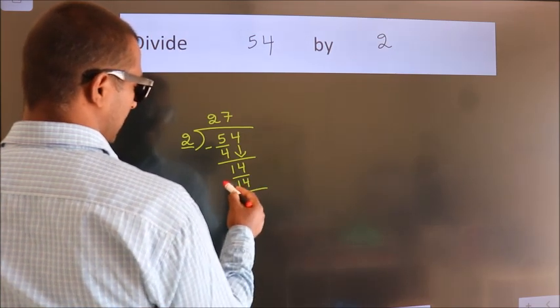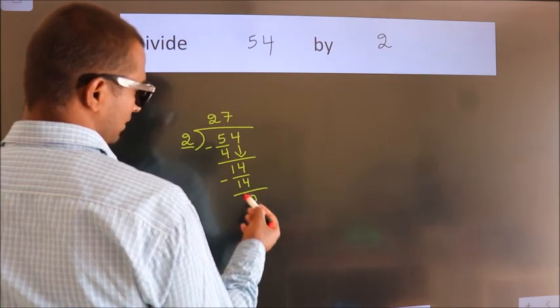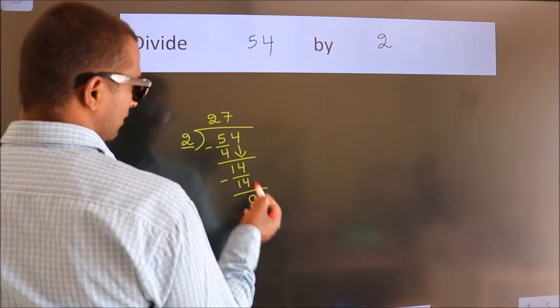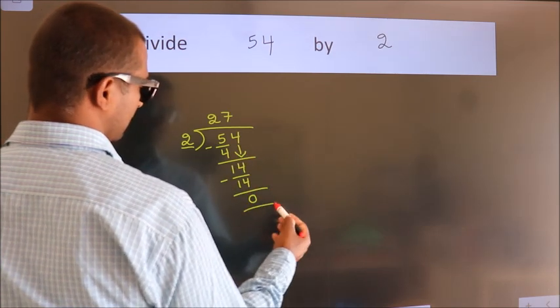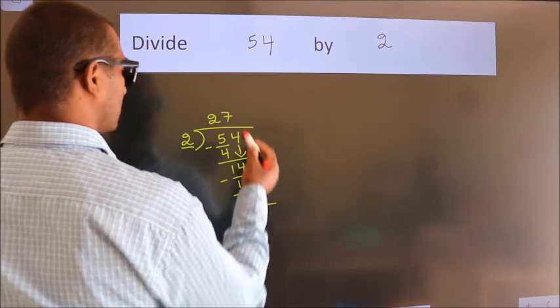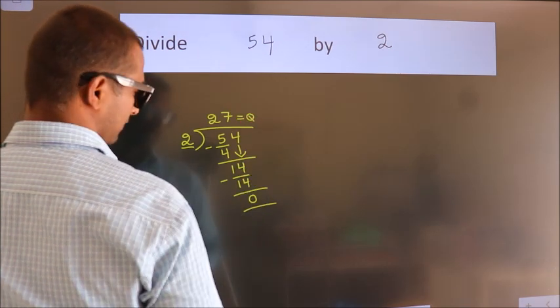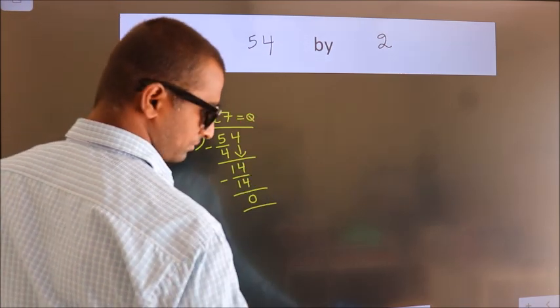Now, we subtract. We get 0. After this, no more numbers to bring down and we got remainder 0. So, this is our quotient. Thank you.